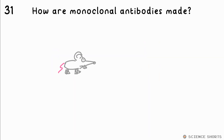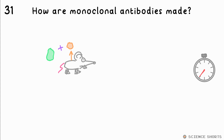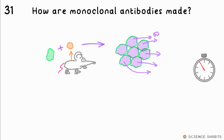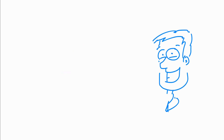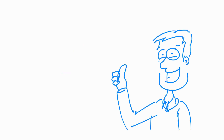How are monoclonal antibodies made? Lymphocytes from mice are combined with tumour cells to make hybridoma cells, which multiply quickly producing many copies of the antibody. Leave a like and a comment if this has helped you — all the best for your exam and I'll see you next time.